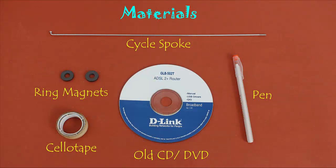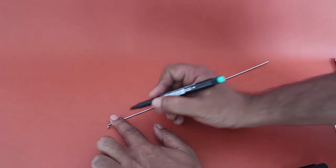To make this standing pen, you need a used DVD or a CD, a ballpoint pen, two ring magnets, and a bicycle spoke.